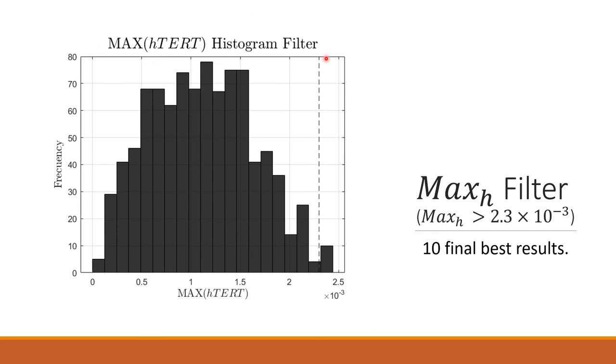After that, we took those combinations and we applied a max expression of hTERT filter. We put our filter here, so it had to be greater than 2.3 times 10 to the minus 3, and that gave us 10 final best results.